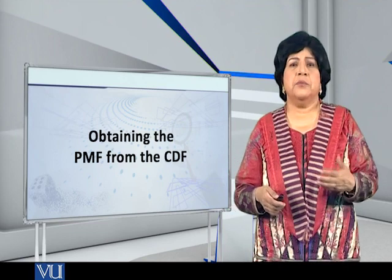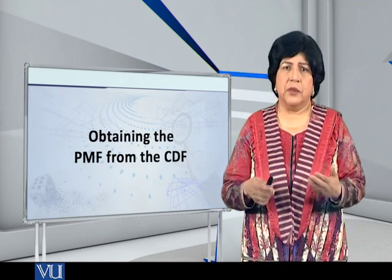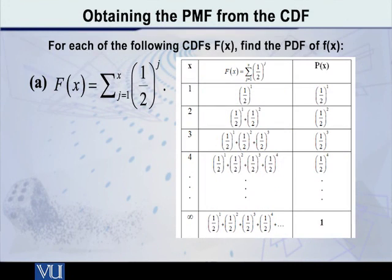So let me try to explain this with the help of a simple example. Suppose that we are given capital F of X is equal to the summation of half raised to J where J itself goes from 1 to X. Capital F of X is the summation J going from 1 to X of half raised to J.